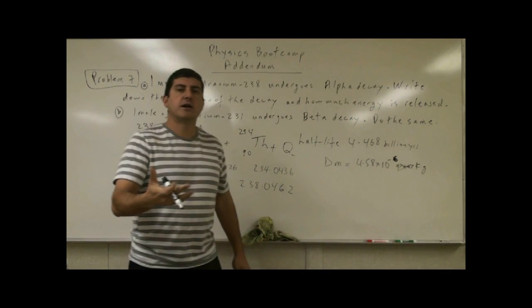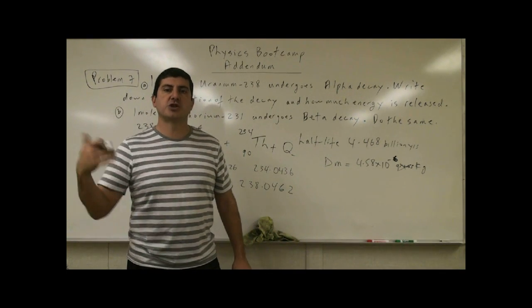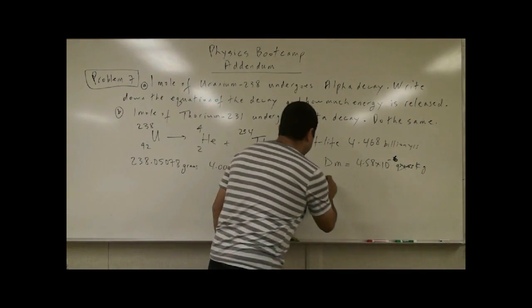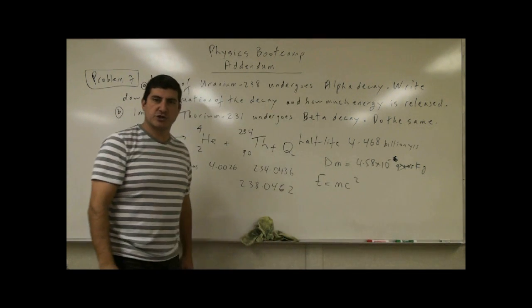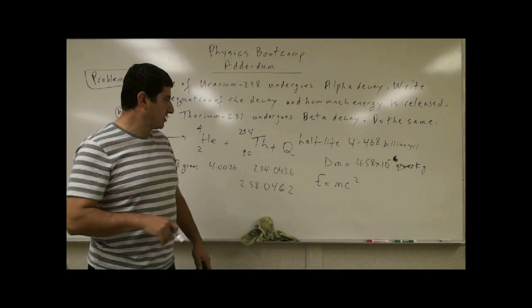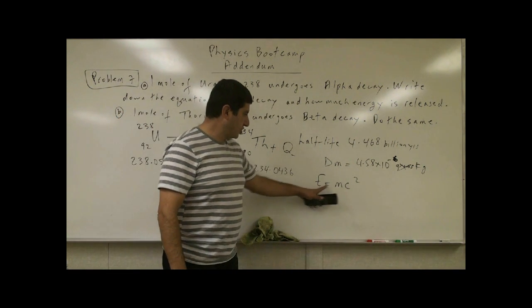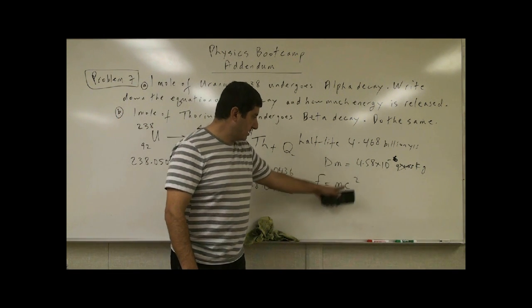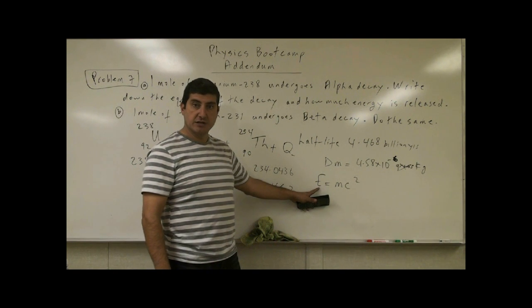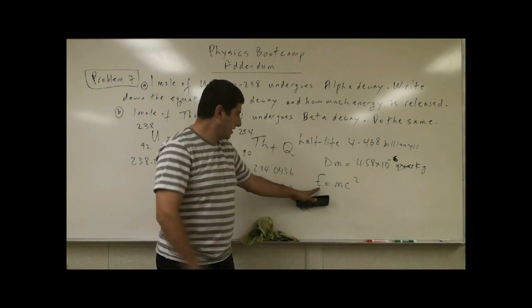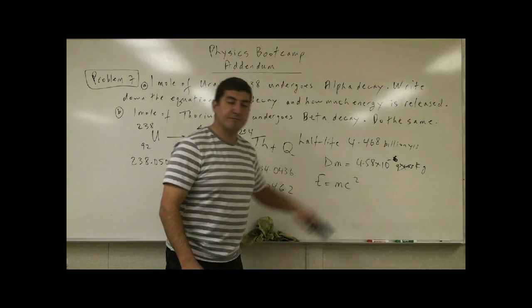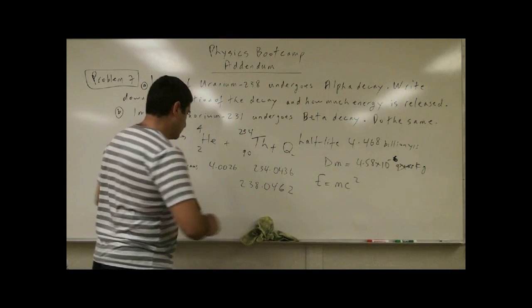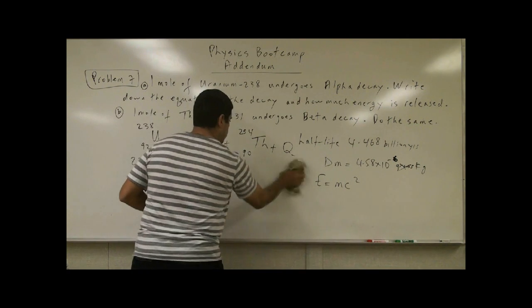238.05078 minus 238.0462, and it's going to be very small. So the loss in mass, delta M, is 4.58 times 10 to the minus 3 grams. Since that's grams, we've got to convert that to kilogram. So that's 4.58 times 10 to the minus 6 kilograms, because 1,000 grams is 1 kilogram. So that's how much mass is lost. How do we find out what is that equivalent to in terms of energy? We have energy equals MC squared.